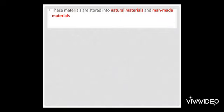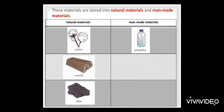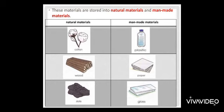And these materials are sorted into natural materials and man-made materials. Natural materials like cotton, wood and slate. And man-made materials like plastic, paper and glass. So, we can sort materials according to their properties.